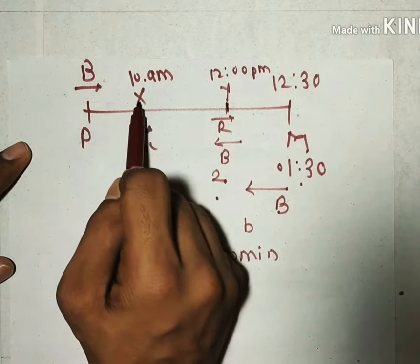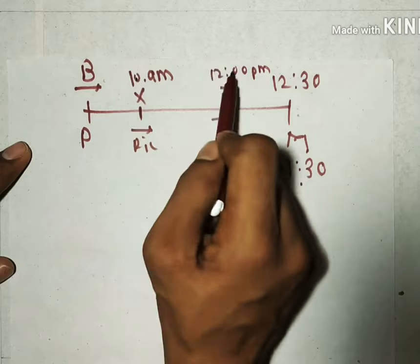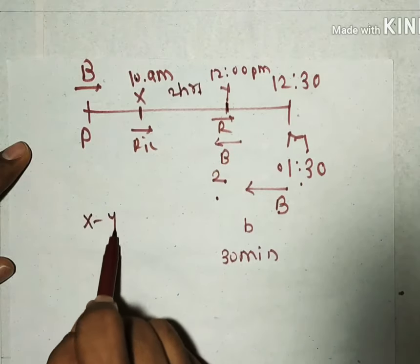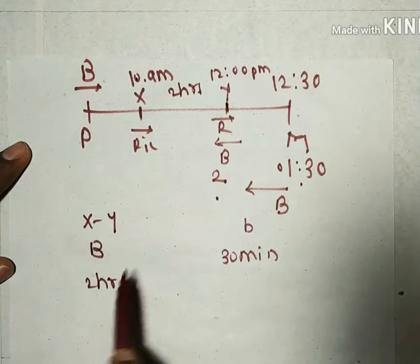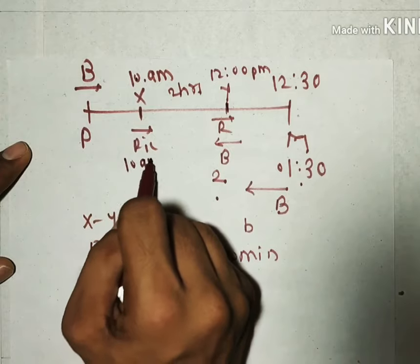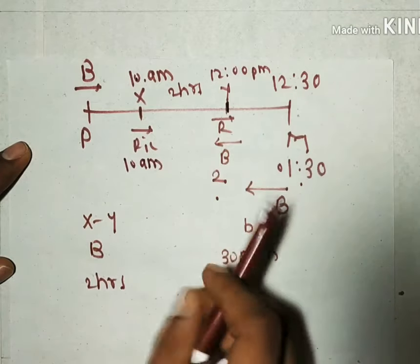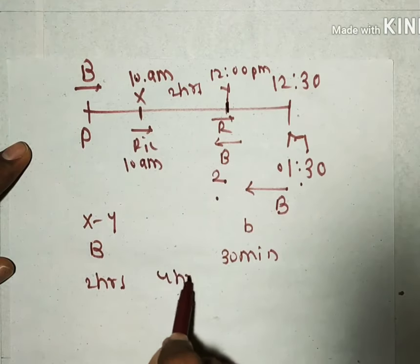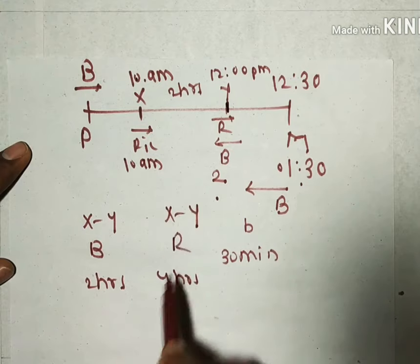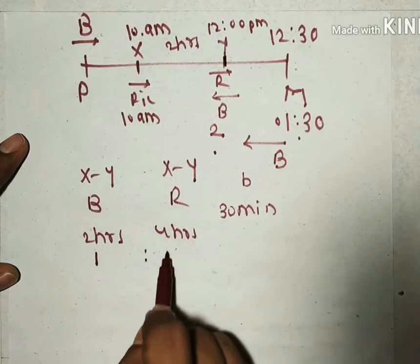From point X to point Y, the bus needed 2 hours — from 10am to 12pm. The rickshaw was at X at 10am and at Y at 2pm, so the rickshaw needed 4 hours from X to Y. This means if the bus needs 1 hour, the rickshaw needs 2 hours — a ratio of 1 to 2.